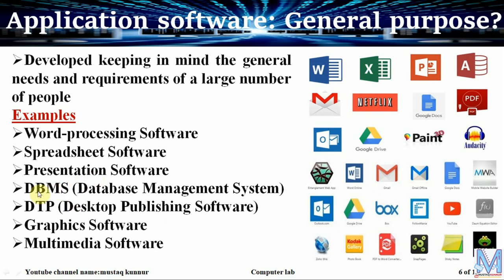For database management, we use DBMS software. For desktop publishing, we use DTP software such as Adobe Photoshop, Acrobat Reader, and CorelDRAW. Graphic software and multimedia software are also examples of general purpose software. Symbols shown here include MS Word, Excel, PowerPoint, database management tools, Netflix, email, and Google Drive.